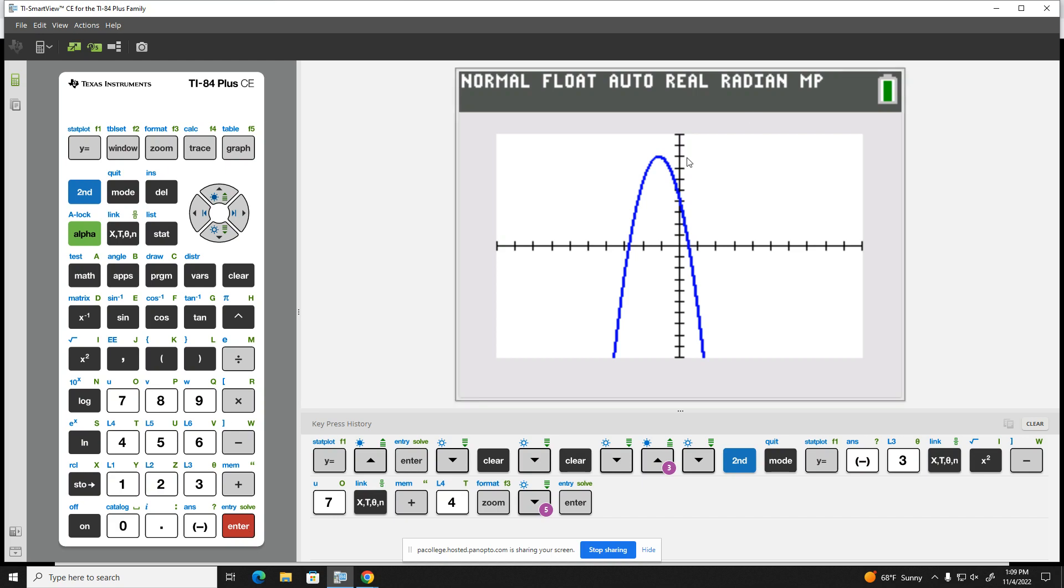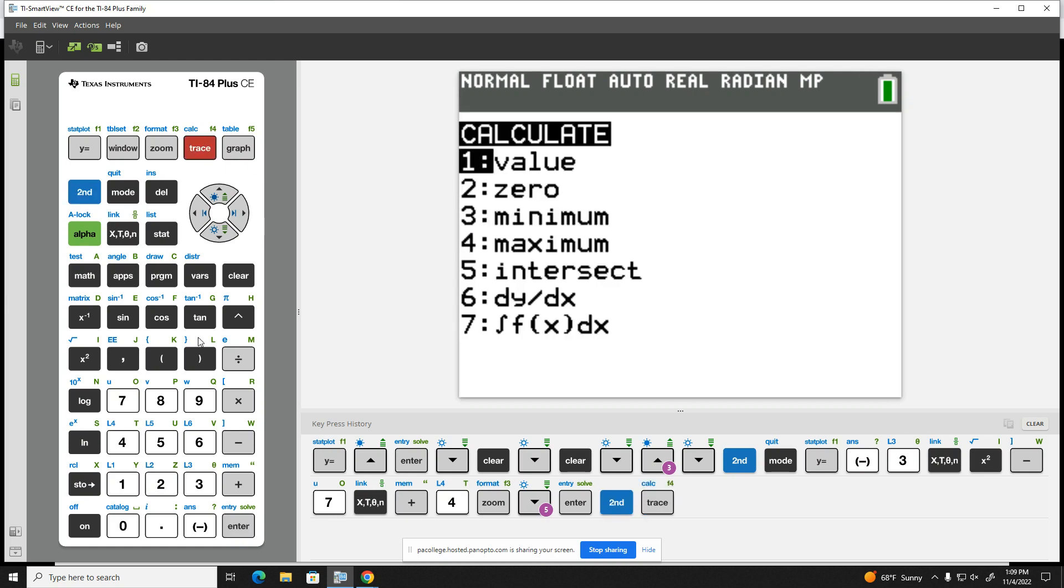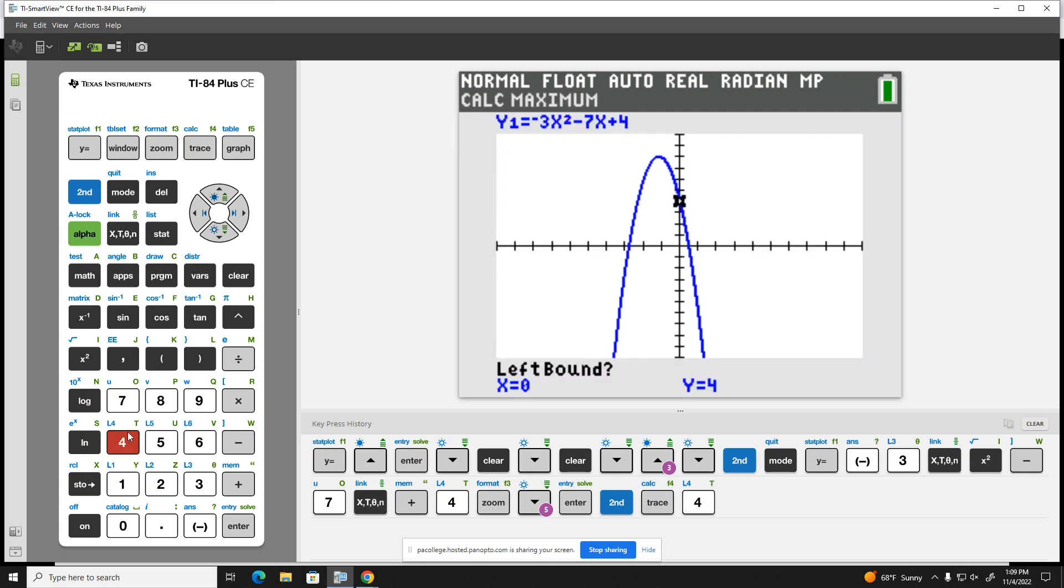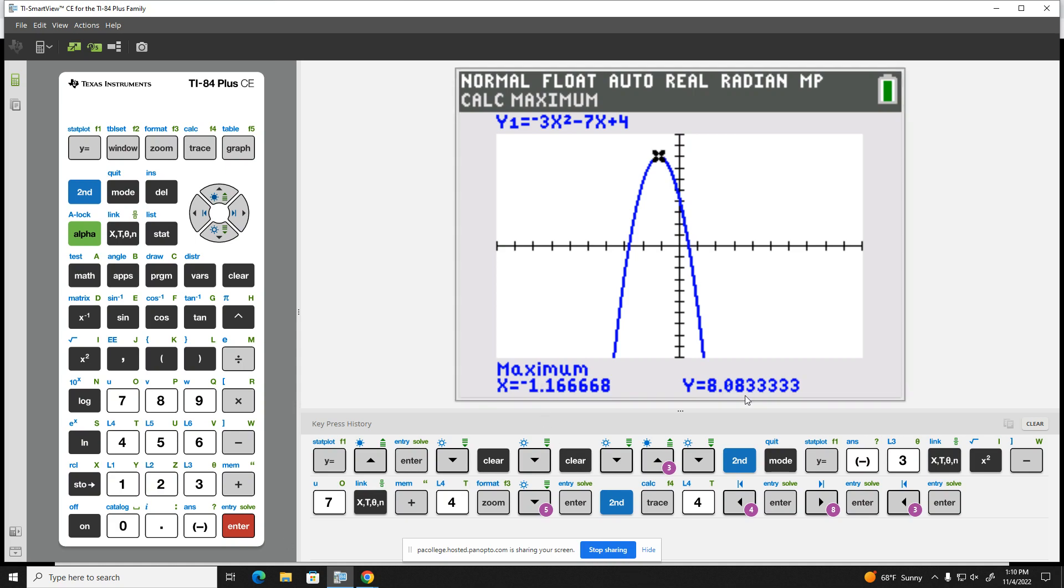In order to find the vertex, I recognize that based on the shape of the parabola, this has a maximum point. So second and trace. I choose option 4 for maximum. I first move my cursor to the left of the maximum and hit enter for left bound. Move my cursor to the right of the maximum and hit enter for right bound. And I do come back and guess and hit enter. And I get this decimal answer. And so we are going to need to round at some point. And so I am going to round to two decimal places for each of these values.